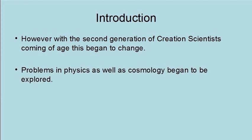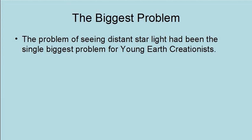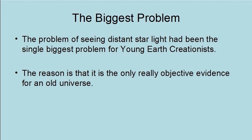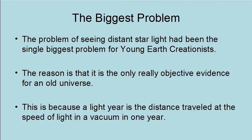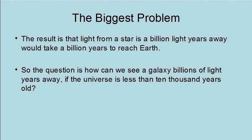Problems in physics as well as cosmology began to be explored. Today, creation science goes well beyond geology and biology, but includes work done in physics, chemistry, and cosmology. The problem of seeing distant starlight has been the single biggest problem for young Earth creationists. The reason is that it is the only really objective evidence for an old universe. This is because a light year is the distance traveled at the speed of light in a vacuum in one year. The result is that light from a star a billion light years away would take a billion years to reach us. So the question is, how can we see a galaxy billions of light years away if the universe is less than 10,000 years old?